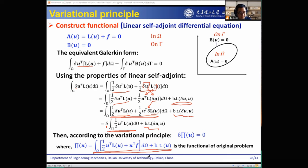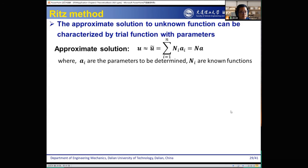For a specific question, you can use this general formula to work out the functional and then proceed with the other steps. Compared to the weighted residual method, we have different specific methods for the variational principle. Here we first introduce the Ritz method. For the Ritz method, the approximate solution to the unknown function can be characterized by trial functions with parameters.